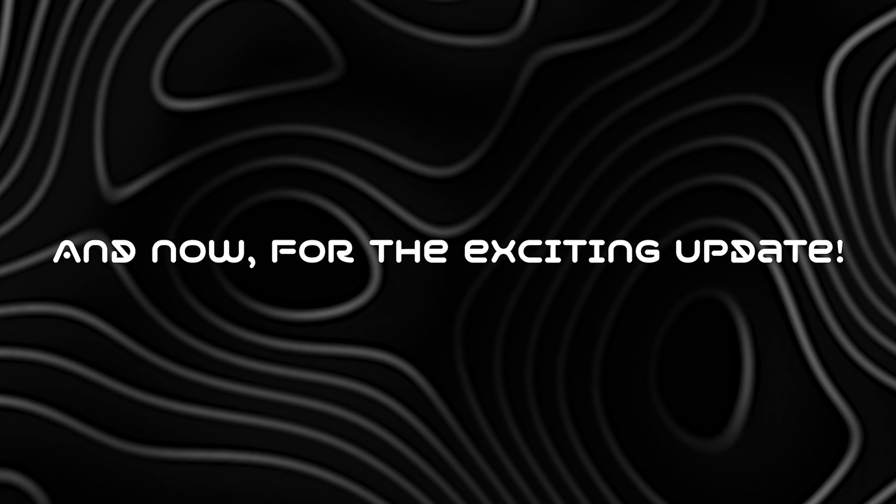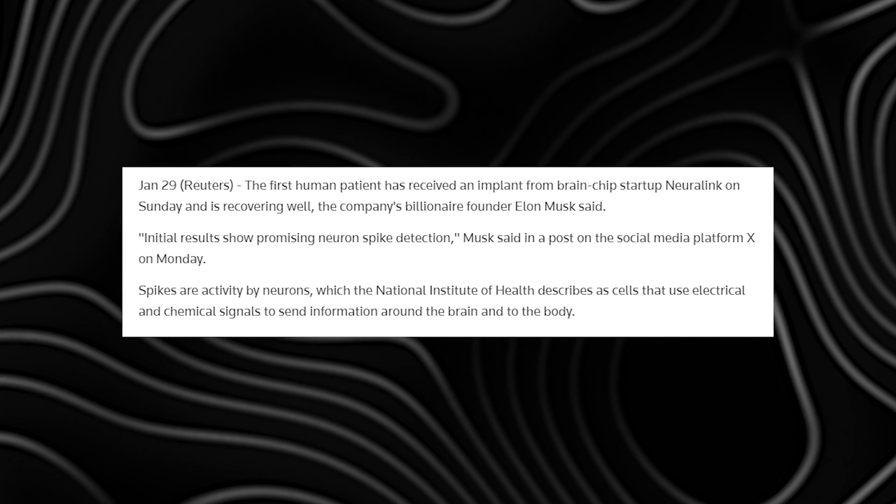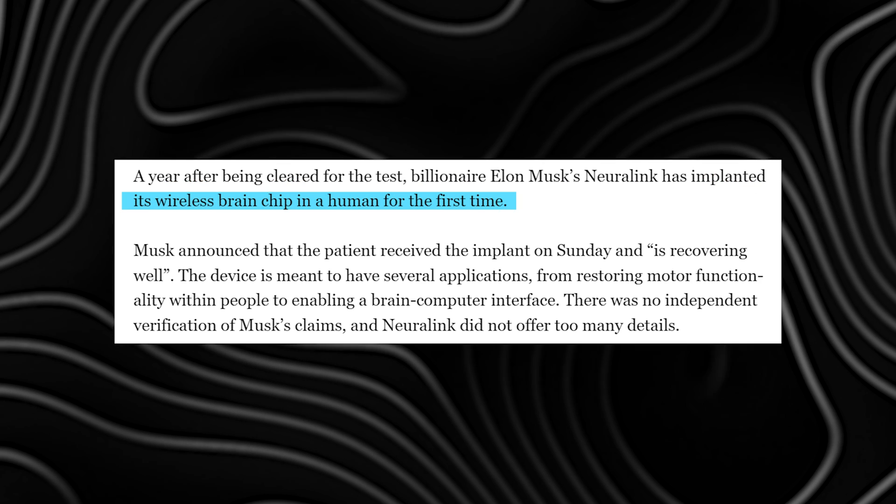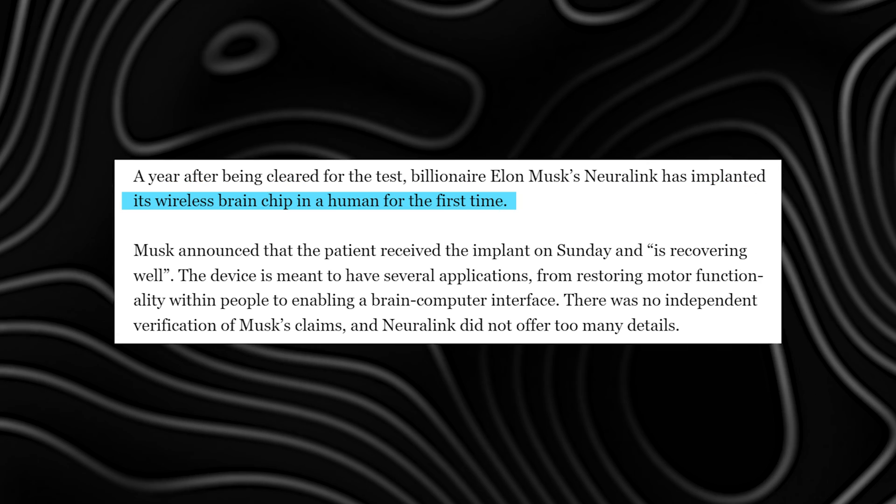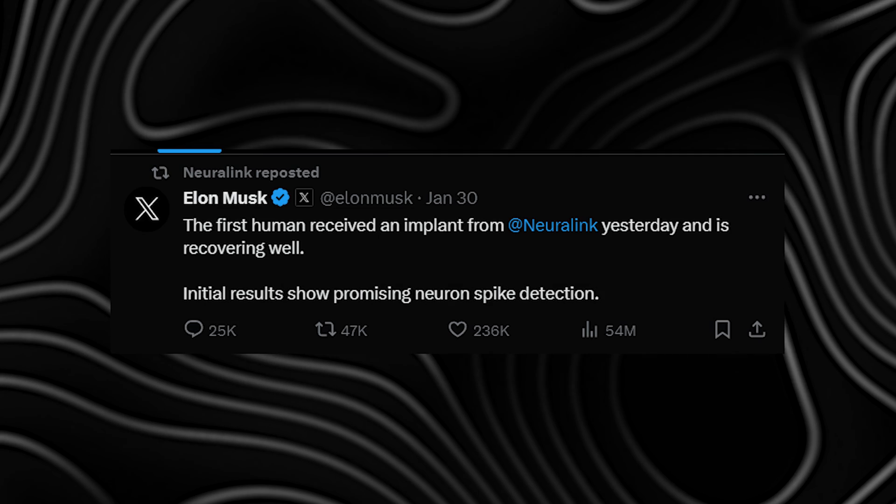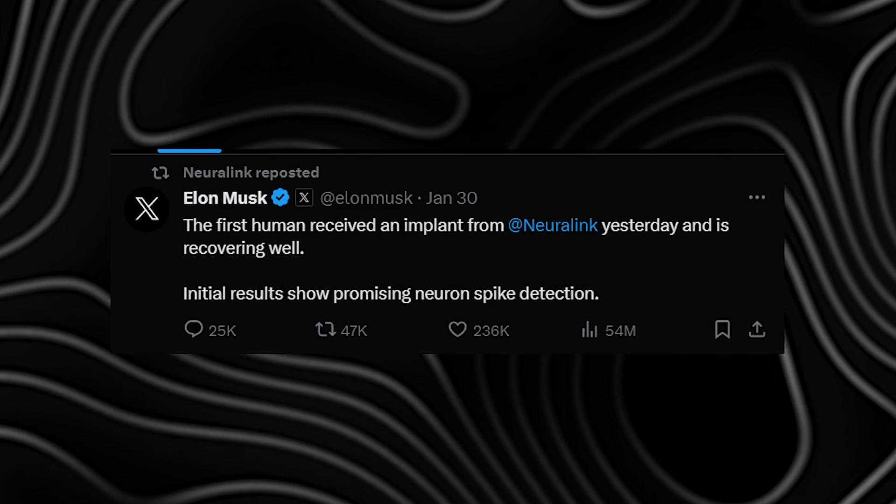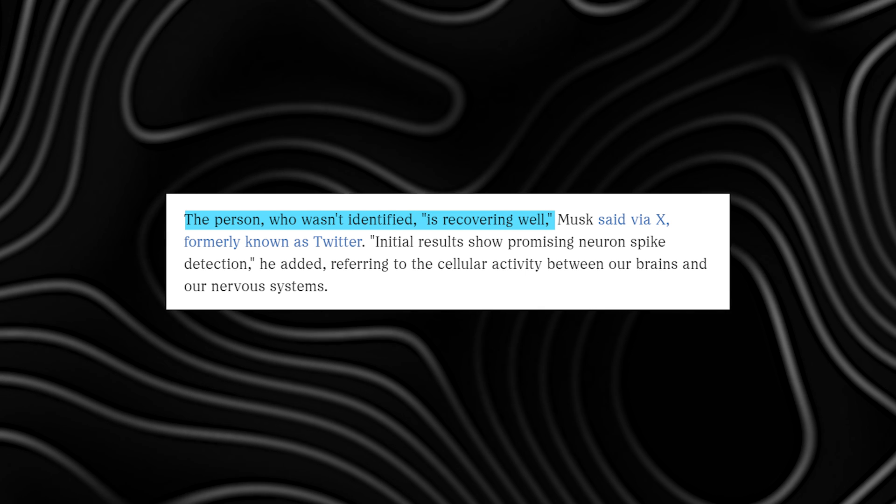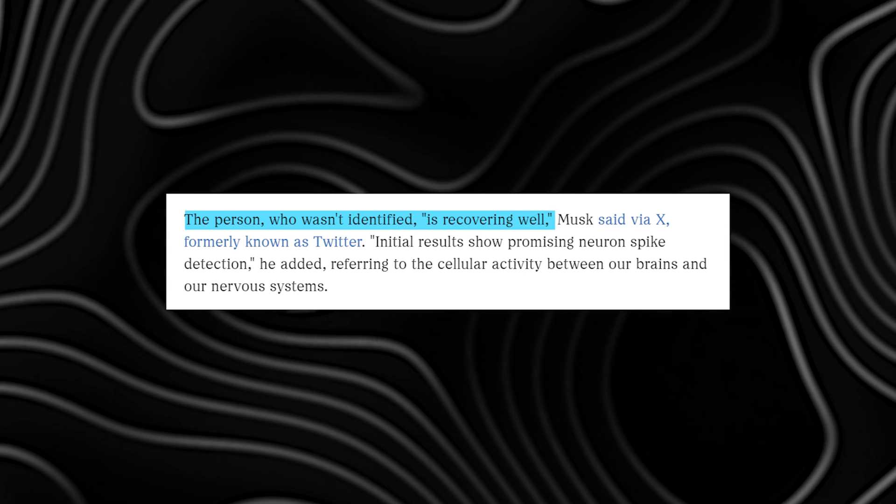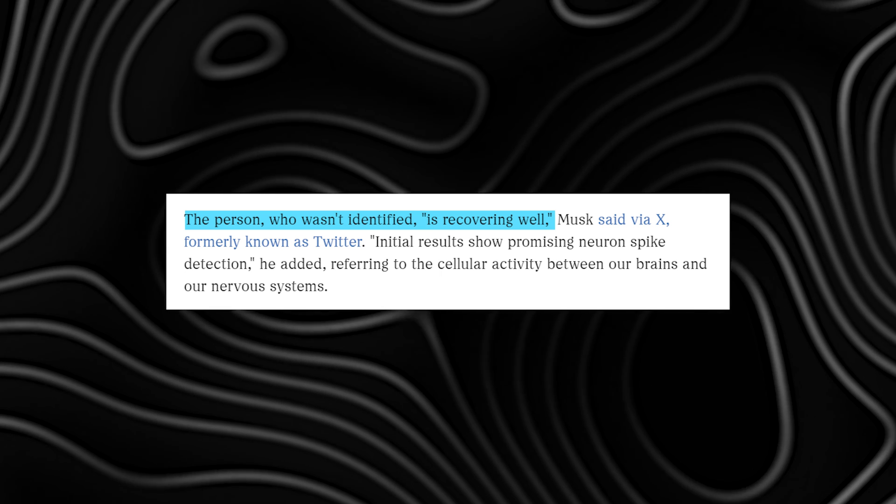And now, for the exciting update. On January 28, 2024, Neuralink achieved a monumental milestone by successfully implanting its brain device in a human patient. This marks a significant step forward for the company, and Elon Musk himself shared the news on the social media platform X. The first recipient, referred to as Link, is reportedly recovering well, with initial results showing promising neuron spike detection.